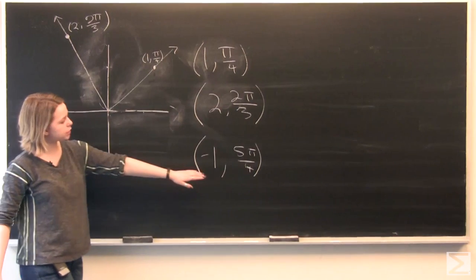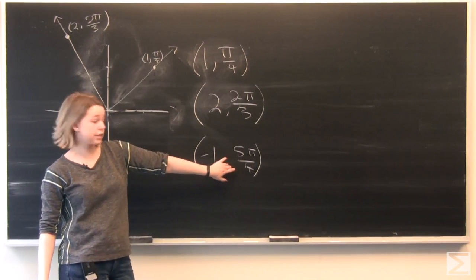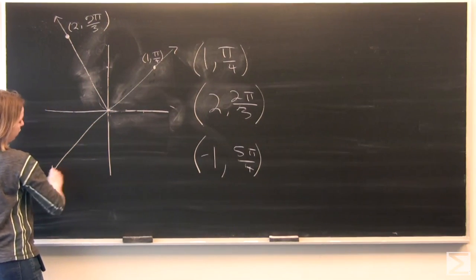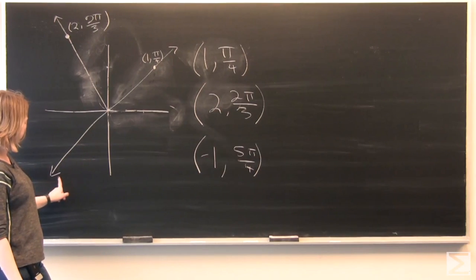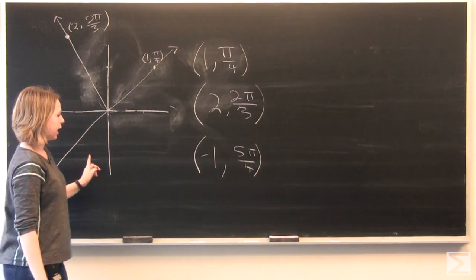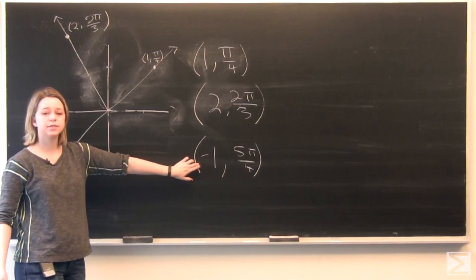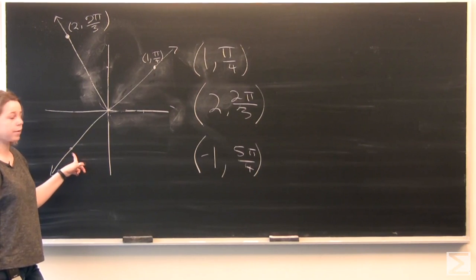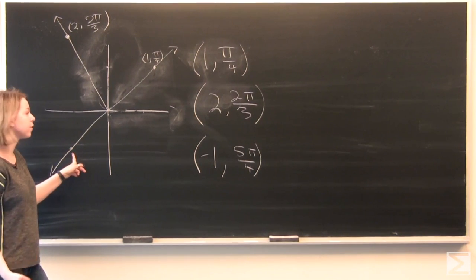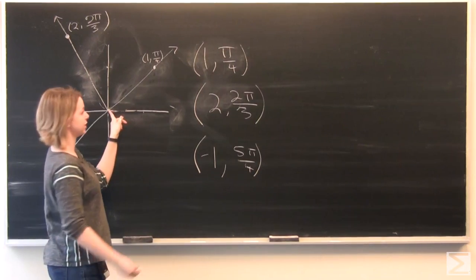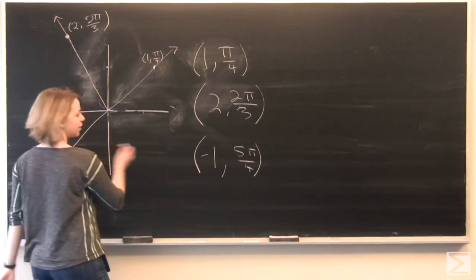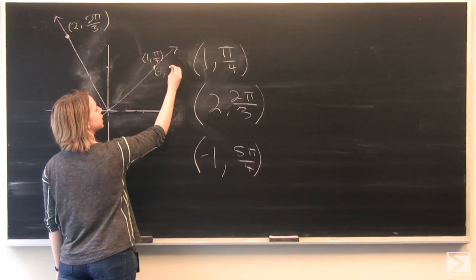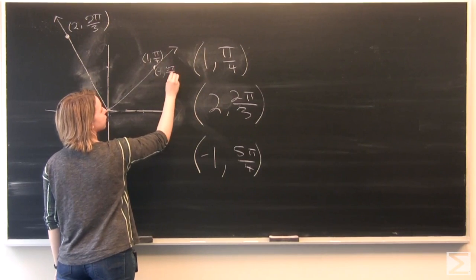For our negative numbers, we're going to look at the angle first. We're going to move 5 pi over 4 radians. This gives us this ray in the third quadrant. If this was a positive 1, our point would be about here along the line. But because it's negative, we're going to move backwards from the origin instead. What we'll find is that negative 1, 5 pi over 4 is actually the same exact point as 1 pi over 4.